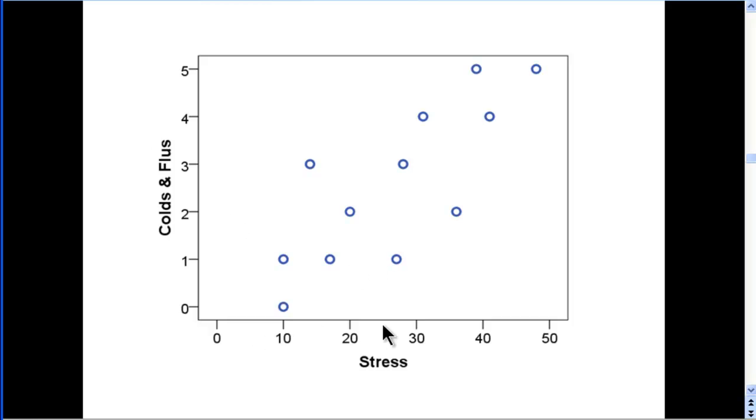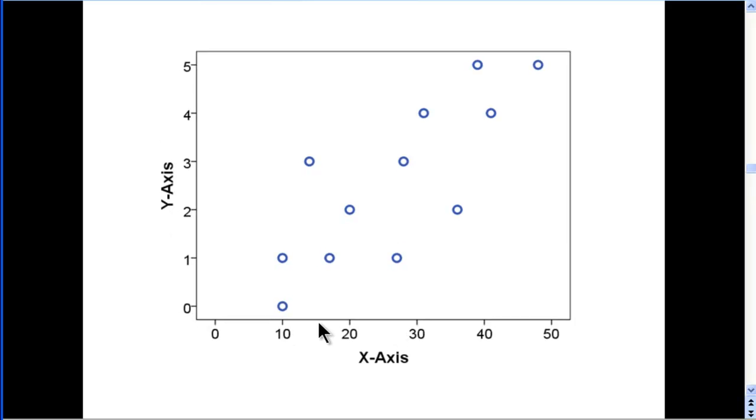So on this axis, actually I'll go to the next, this is called the x-axis here. The levels of stress that were measured is on the x-axis, and the number of colds is on the y-axis. And each person has two scores. So this person here had a score of 10 for stress and had one cold over the year. This person also had a stress score of 10, but had zero colds during the year. And then all the way up here, we have someone who had a stress score of almost 50, and five colds and flus, I think I called it.